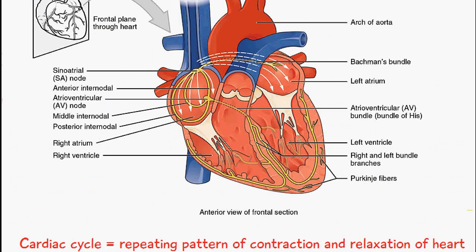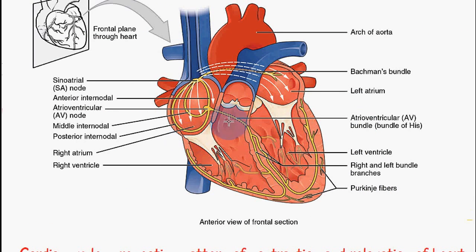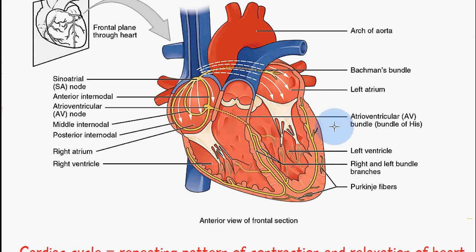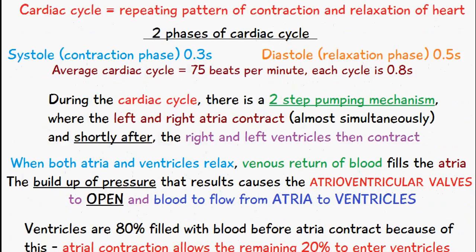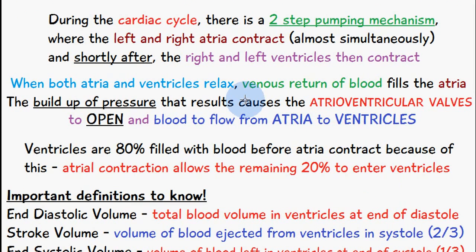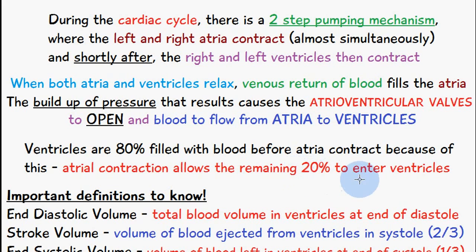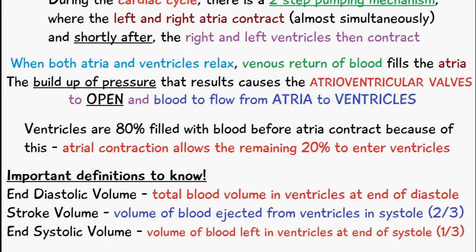This increasing pressure in the atria causes the atrioventricular valves — the valves between the atria and the ventricles — to open up, and blood flows from the atria into the ventricles. The ventricles become 80% filled with blood this way, and then the atria contract to push the remaining 20% of blood into the ventricles.